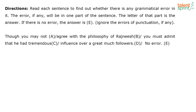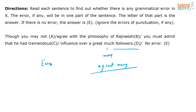Though you may not agree with the philosophy of Rajneesh, you must admit that he had tremendous influence over a great much followers. Where is the error? We are looking at 'followers' — which means they are countable and you don't use 'much,' you use 'many.' 'A great many' is in fact a collocation. The error is in part D where you change 'much' to 'many.' Followers are countable — how much money? We don't say how many money. But we do say how many rupees because I can count rupees.